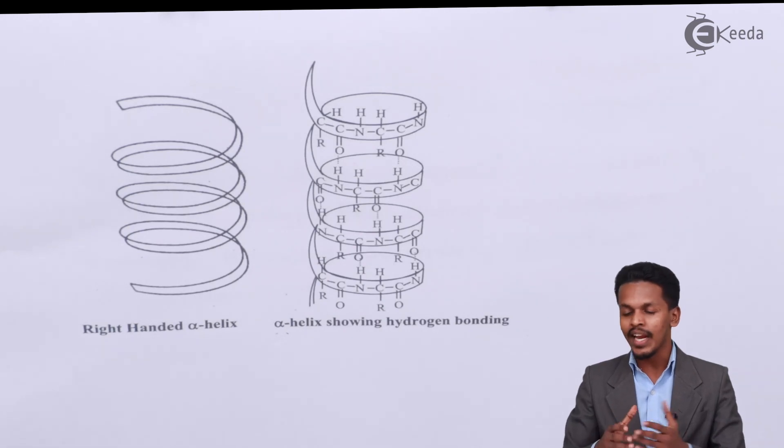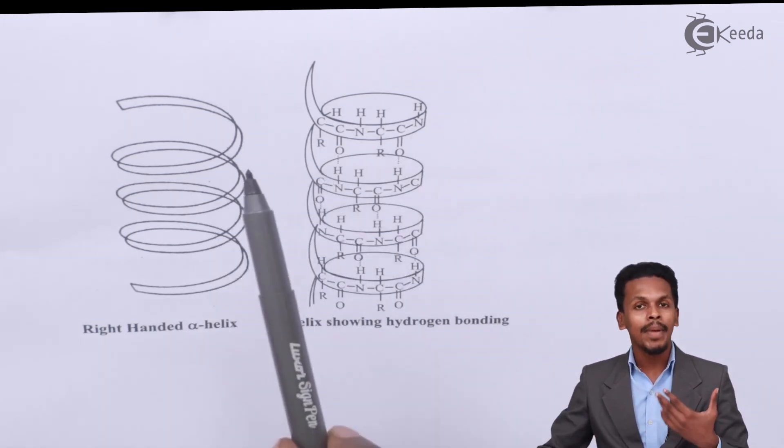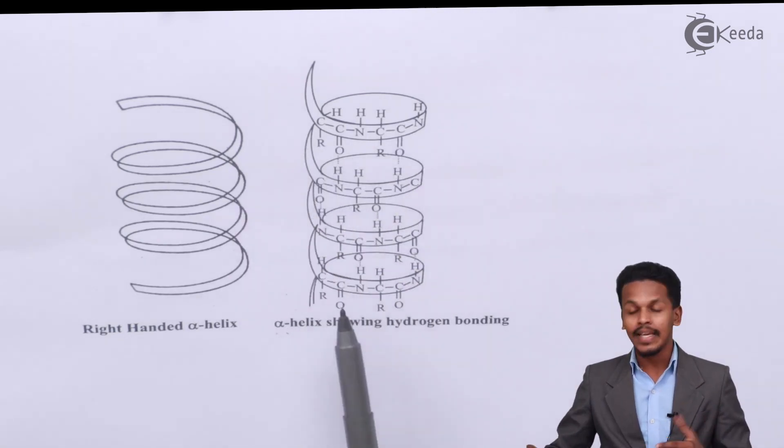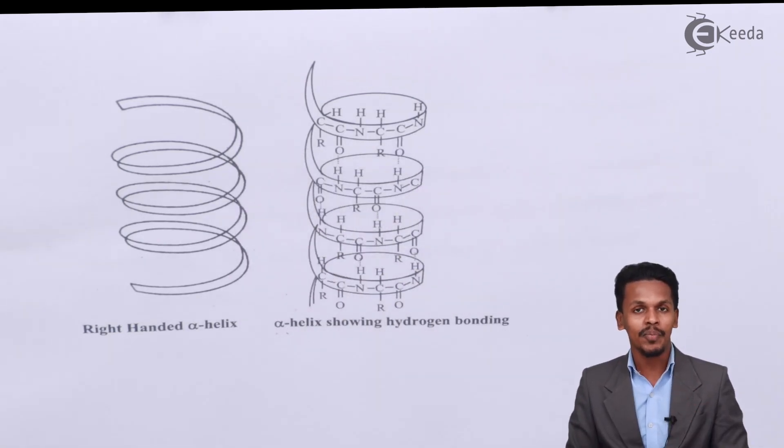Therefore this is the secondary structure which gives a sequence and how they are arranged, how the peptide linkage is arranged. This is the first type of the secondary structure of proteins and now let me discuss about the next one.